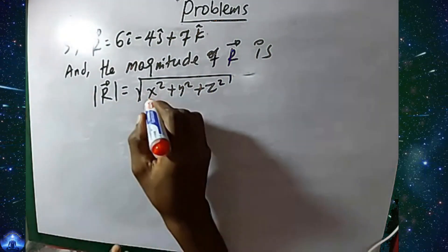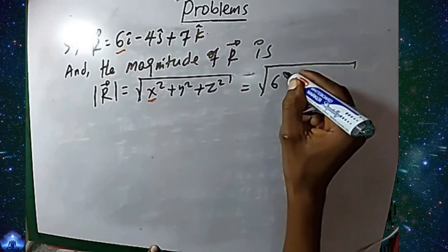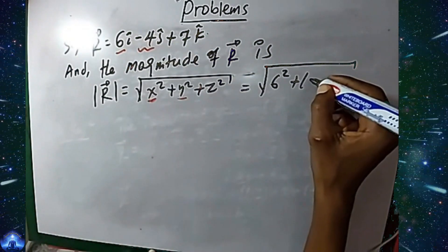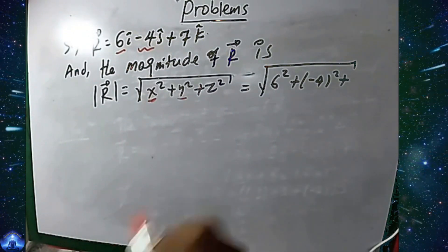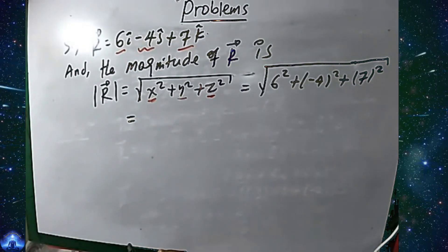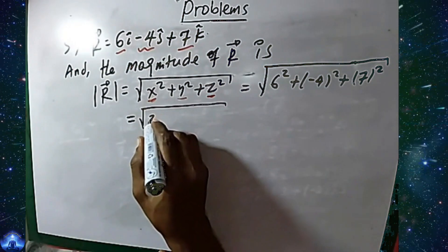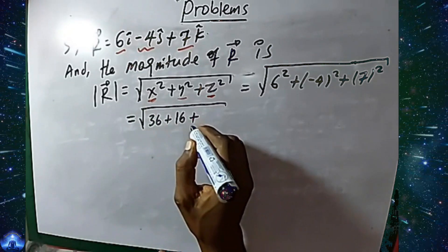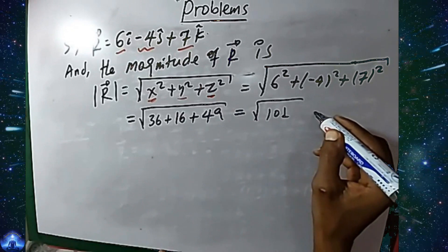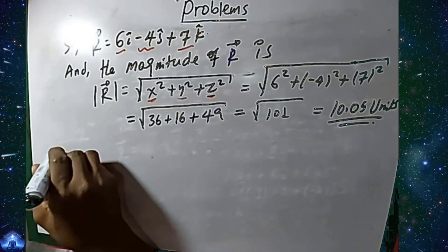Where x is 6, y is minus 4, and z is 7. So the magnitude of r equals the square root of 6 squared plus minus 4 squared plus 7 squared, which equals the square root of 36 plus 16 plus 49, equals the square root of 101, which is approximately 10.05 units.